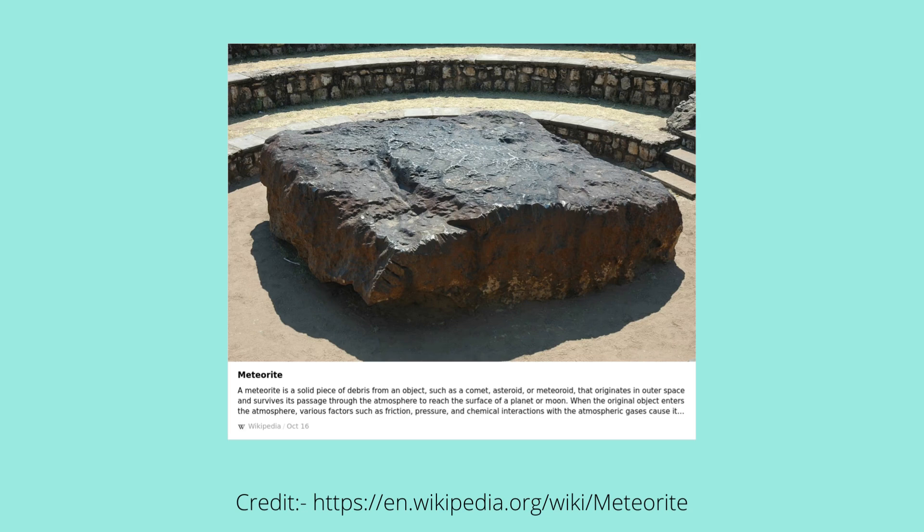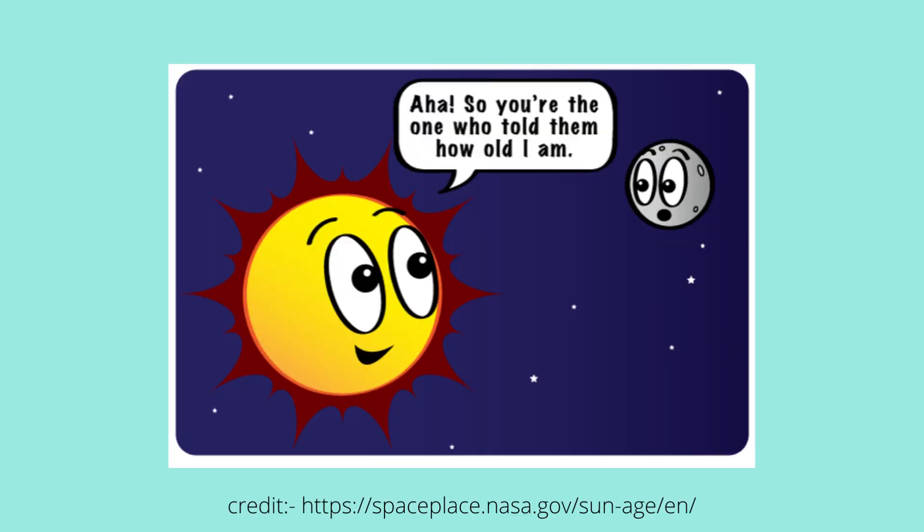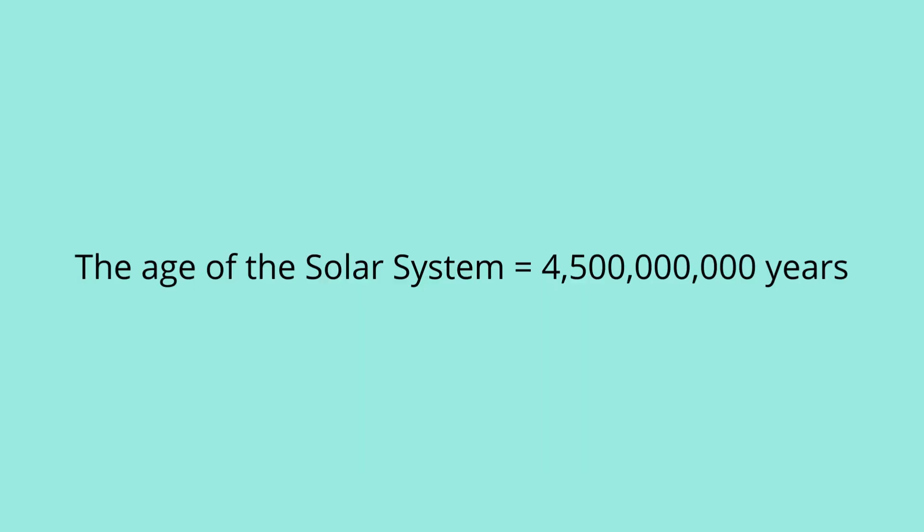One object that we can look for are meteorites. Meteorites are solid pieces of debris from an object such as a comet, asteroid, or meteoroid that originates in outer space and survives its passage through the atmosphere. These objects carry a lot of information. Alternatively, lunar rocks can be used. From all the Apollo missions that stepped on the surface of the Earth, 382 kilograms of lunar rock and other samples were brought back. These two can be used to estimate the age of the sun. We get almost 4.5 billion years.